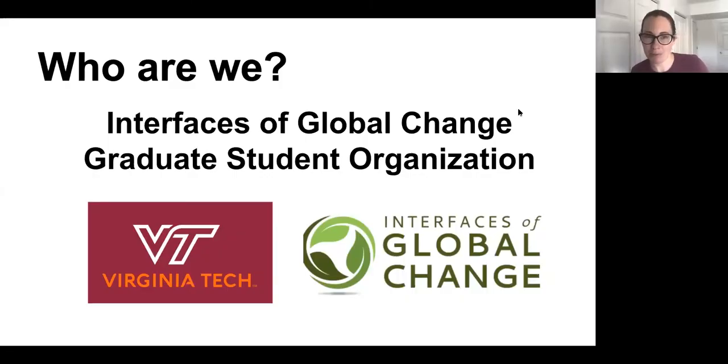Isaac and I are both from the Interfaces of Global Change graduate student organization at Virginia Tech. That is a program at Virginia Tech that consists of many different departments working towards global change, which can be anything from conservation to climate change that involves an interdisciplinary group of people. So that means people that do a bunch of different jobs.